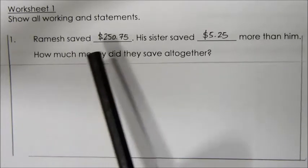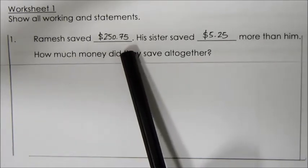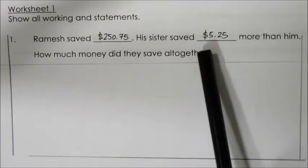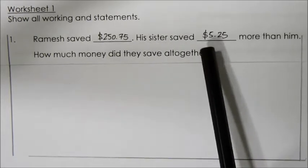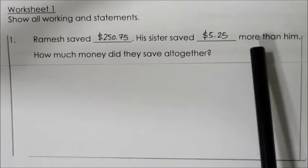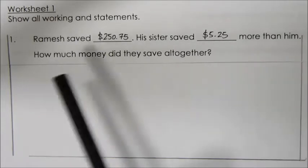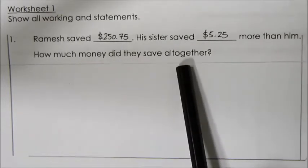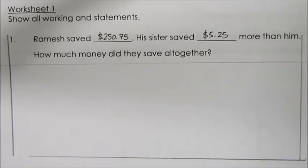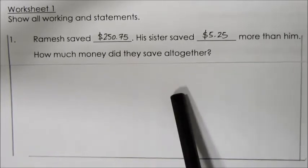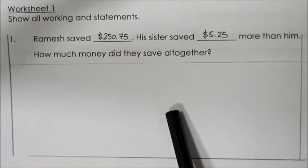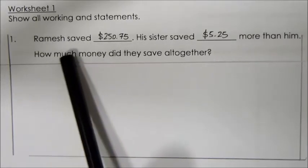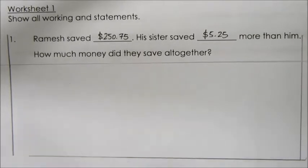Ramesh saved $250.75. His sister saved $5.25 more than him. How much money did they save altogether? In this question, we need to find out the total amount of money they saved altogether, which means Ramesh plus his sister.